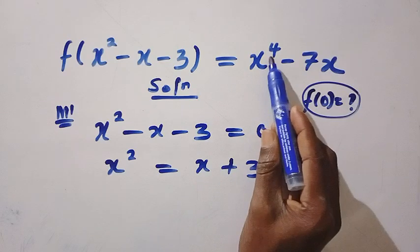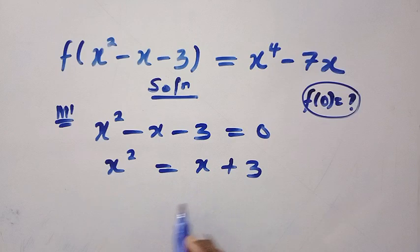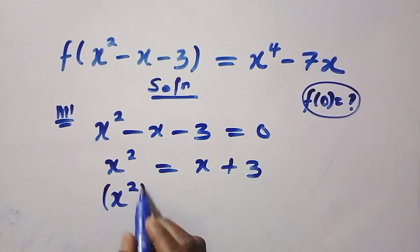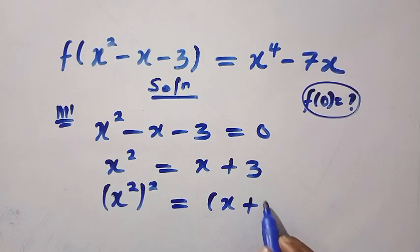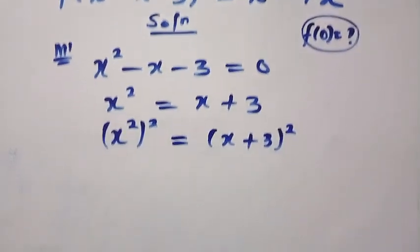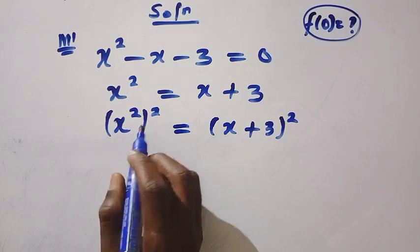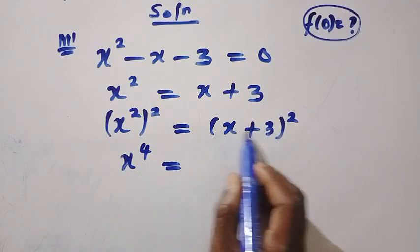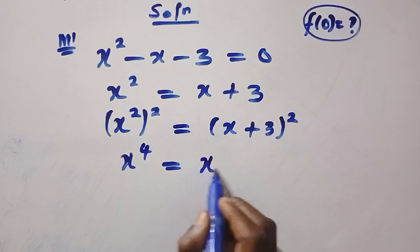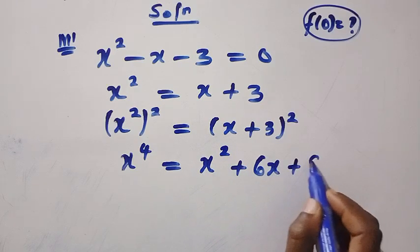Next, we need x to the power of 4. If I raise both sides of this equation by 2, we have x squared raised to the power of 2 equals x plus 3 raised to the power of 2. According to the rule of indices, x squared raised to the power of 2 is x to the power of 4. This equals, by expanding x plus 3 squared, x squared plus 6x plus 9.